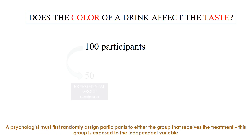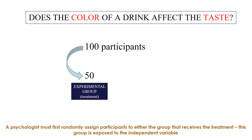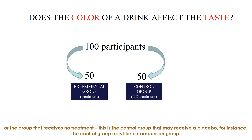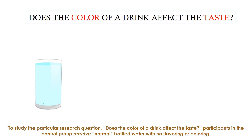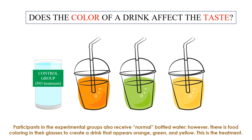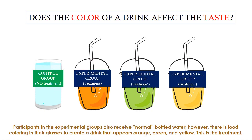A psychologist must first randomly assign participants to either the group that receives the treatment — this group is exposed to the independent variable — or the group that receives no treatment, known as the control group, which may receive a placebo. The control group acts as a comparison group; without it, a psychologist cannot tell whether the treatment is causing a change. In this experiment, control group participants receive normal bottled water with no flavoring or coloring, while experimental group participants receive water with food coloring added to create drinks appearing orange, green, and yellow.